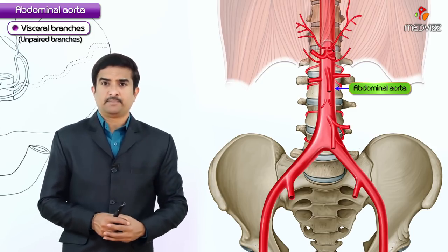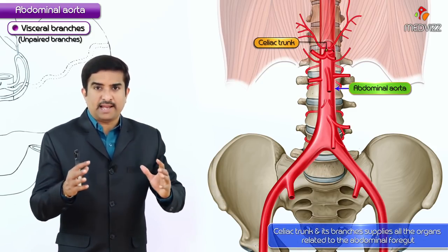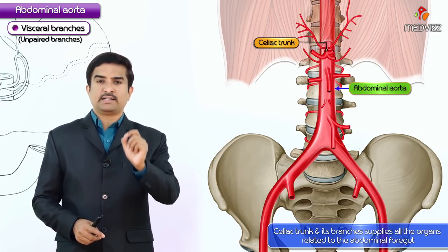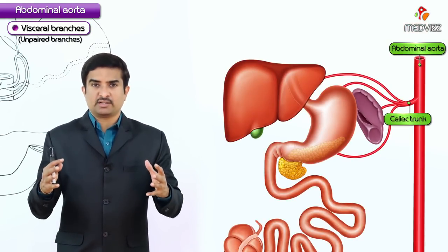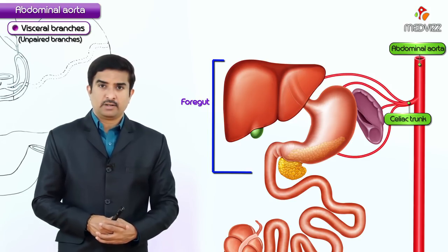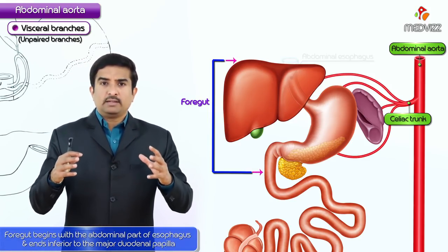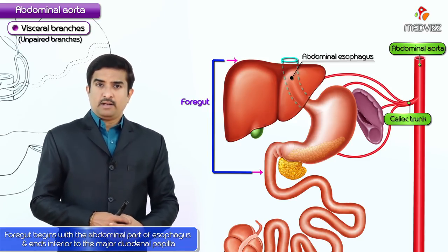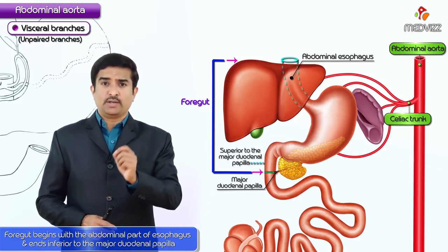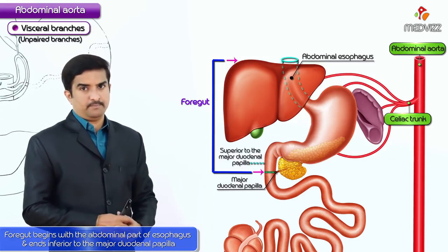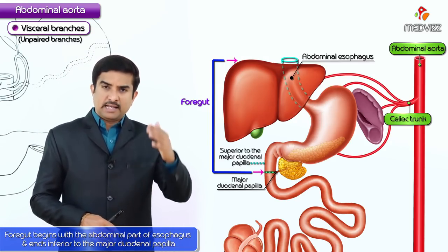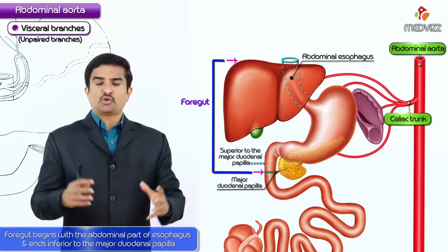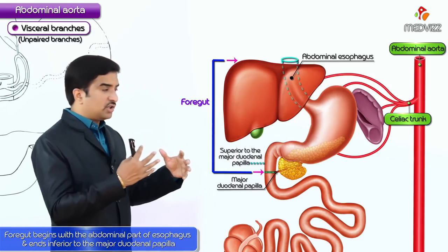The celiac trunk and its branches supply all organs related to the abdominal foregut. The foregut begins at the abdominal part of the esophagus and ends just inferior to the major duodenal papilla, which is located at the midway along the descending part of the duodenum — that is, the mid part of the second part of the duodenum.